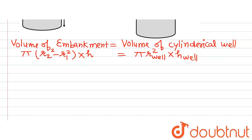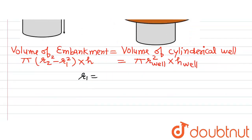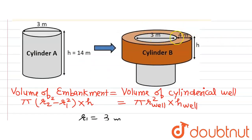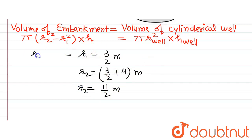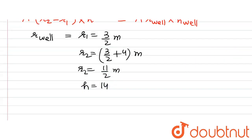The inner radius R1 equals the radius of the cylindrical well. Since the diameter of the well is 3 meters, R1 equals 3 divided by 2 meters. The outer radius R2 of the embankment equals the inner radius plus the thickness, so R2 equals 3/2 plus 4, which gives 11/2 meters. The height of the well is given as 14 meters.